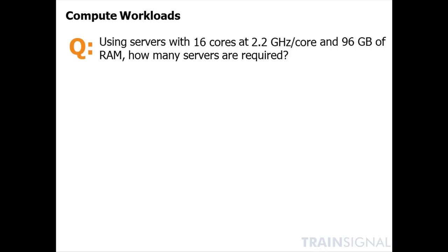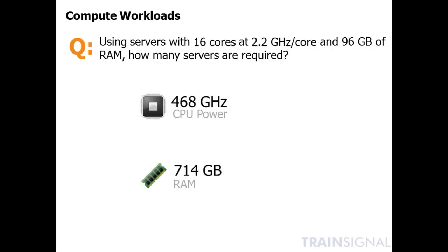Now that we have our design scenario information, let's use it to continue our design process. In this case, we're going to look at compute workloads. I've specified that we're going to use servers with 16 cores, 2.2 gigahertz per core, and 96 gigs of RAM. How many servers would be required? Well, the logical compute design has already been given to us: 468 gigahertz of CPU power and 714 gigabytes of RAM. So how do we proceed with calculating what our physical design is going to look like?